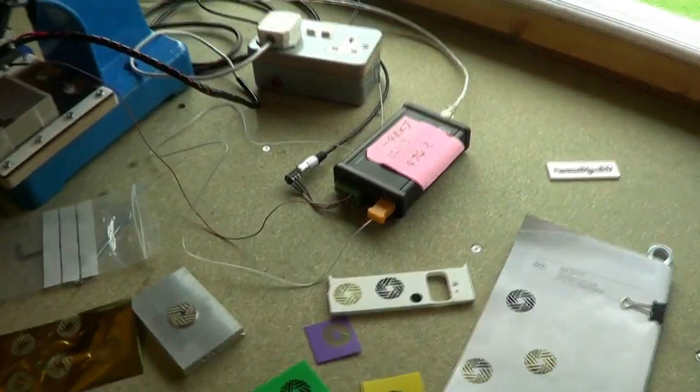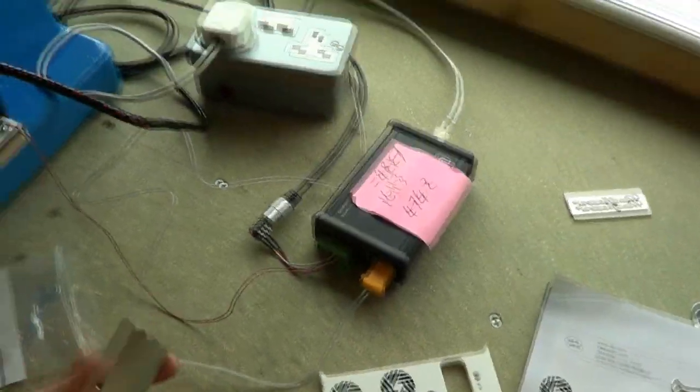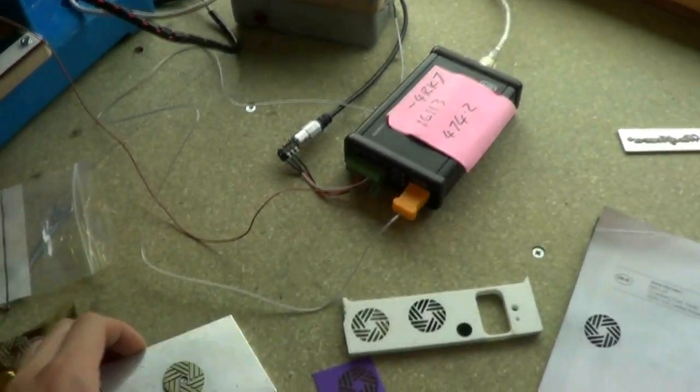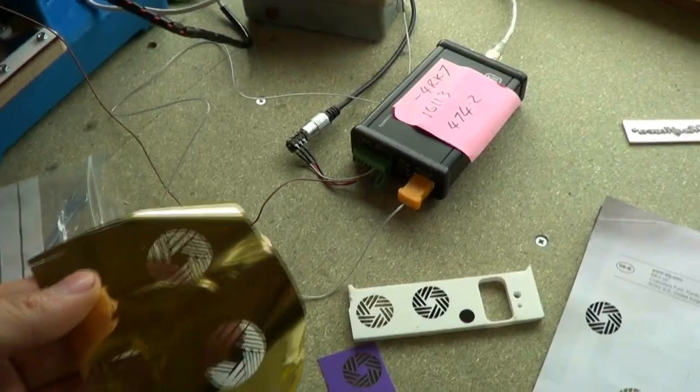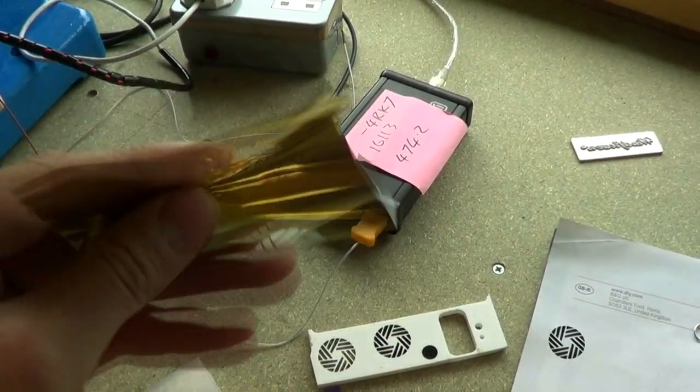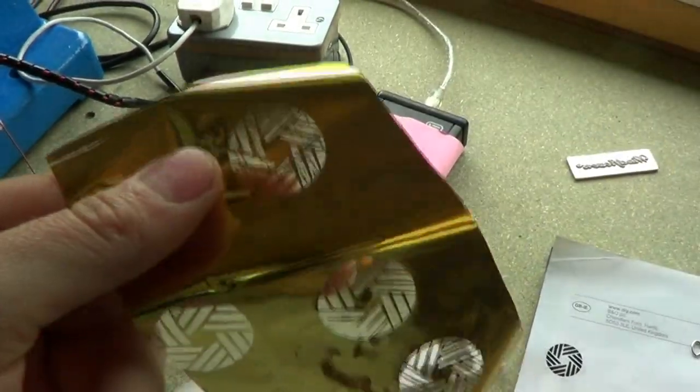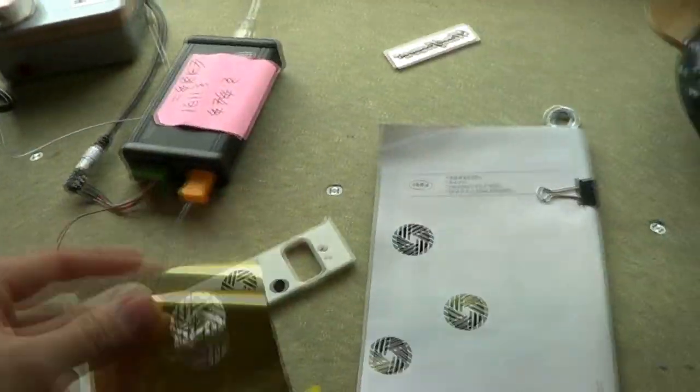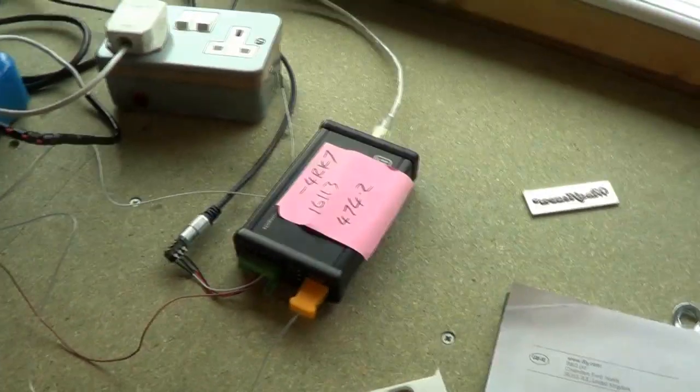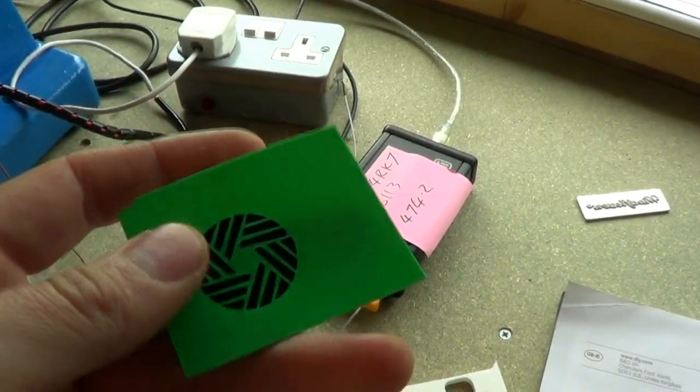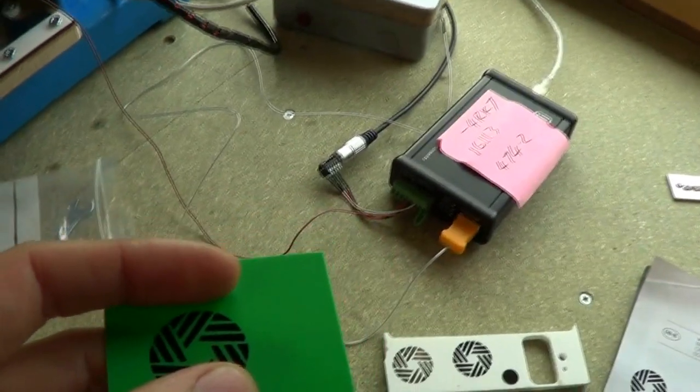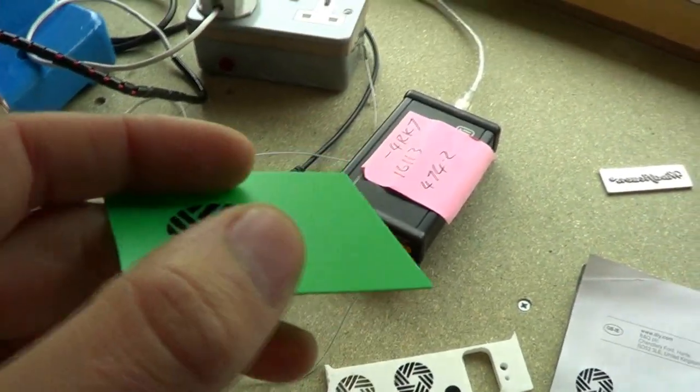So what exactly is hot foiling? It's where you have a patterned metal die such as this. The die is heated and pressed against a transfer foil or film. This is a thin plastic sheet which contains a layer of pigment. In this case it's gold. I've also got some gloss black here. That's placed on top of a substrate that you want to print on and any areas that are in contact with the patterned die, the pigment melts and sticks to the substrate.